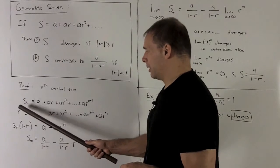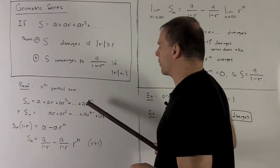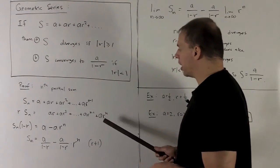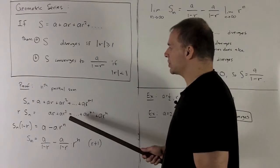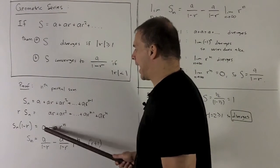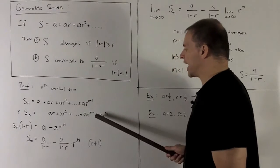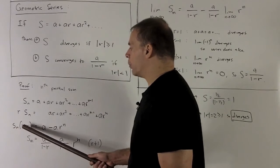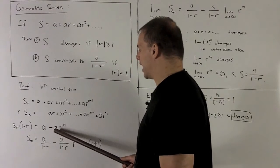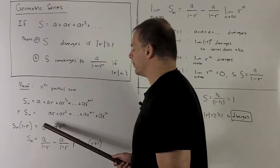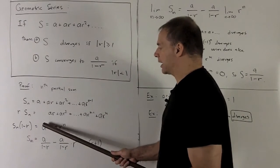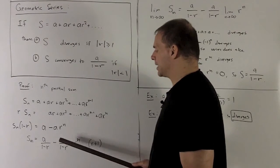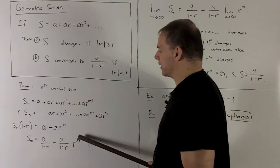I multiply this by r. What does that do? It shifts everything over to the right by one, and then ar to the n minus one just becomes ar to the n. We take the difference — top minus bottom is going to give me an a. Everything in the middle cancels out, and then we have a minus ar to the n. So I have s of n times one minus r equals a minus ar to the n. I can factor an a out, divide by one minus r, and collecting everything separately gives us a over one minus r, minus a over one minus r times r to the n.